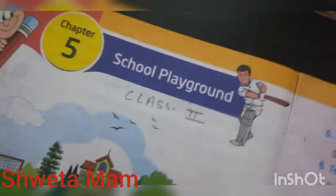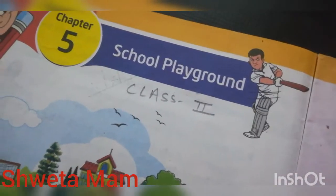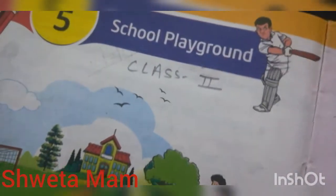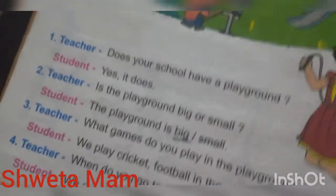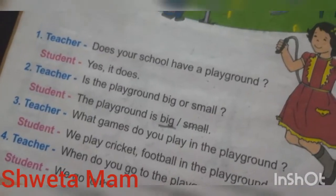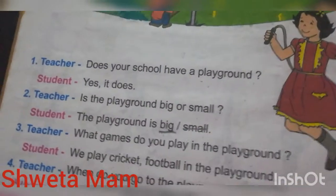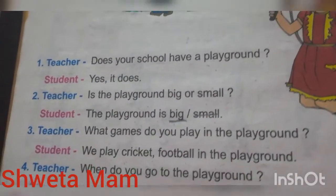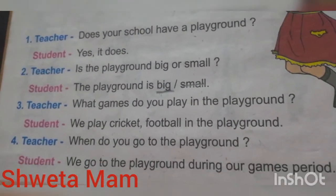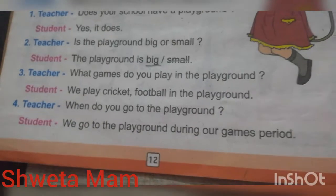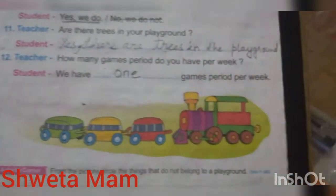So, Class 2, this is Chapter 5: School Playground. We have done it. Read it, and the questions you have, you can learn to answer them. You can also learn the reading. Okay, thank you.